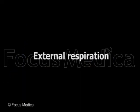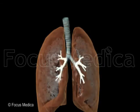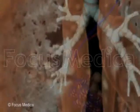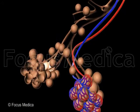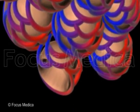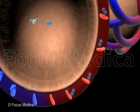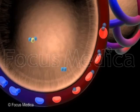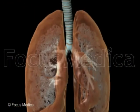External Respiration: In the lungs, the trachea branches into even smaller tubes called bronchioles, which end in alveolar sacs. Each sac is covered by capillaries. Gas exchange is carried out by the small alveolar sacs that take up most of the space in the lungs.